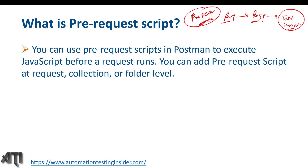To validate whether we are getting the correct HTTP status code, correct response, or correct headers — all these validations we put after we receive the response. The test script will be executed once we receive the response, and the pre-request script will be executed before the request starts. You can add pre-request scripts at request level, collection level, or folder level — similar to test scripts, which can also be added at all three levels.